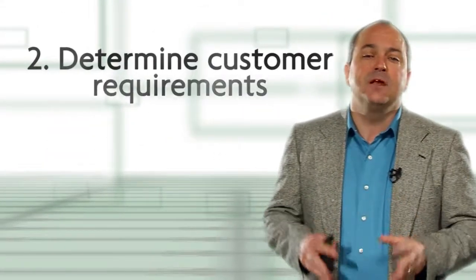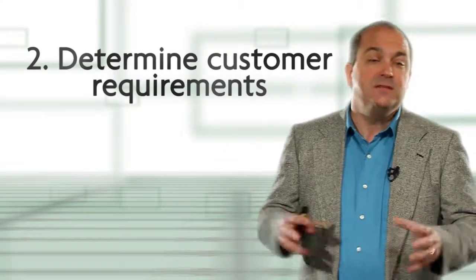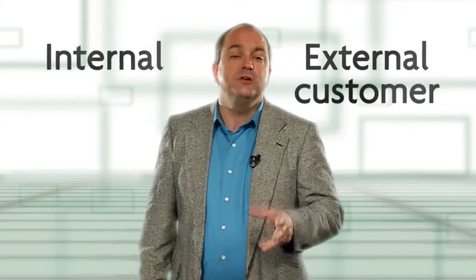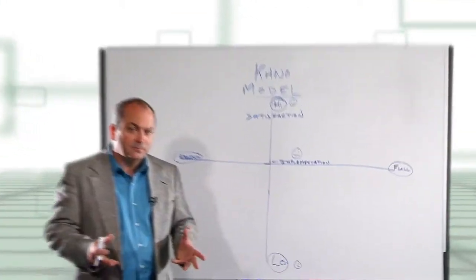The second step is to determine customer requirements. This includes the needs and wants of the customer. Now the customer could be the external paying customer or the customers could be internal people. This is the Kano model, by the way.